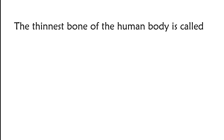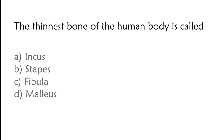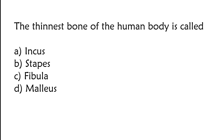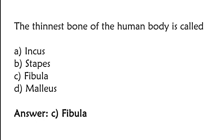The thinnest bone of the human body is called: Incus, Stapes, Fibula, or Malleus. The correct answer is option C. The thinnest bone of the human body is called Fibula.